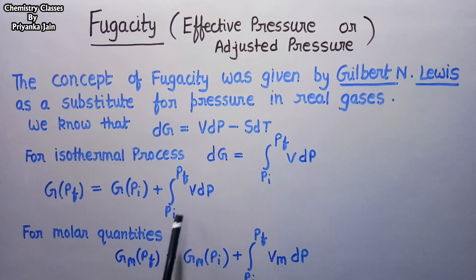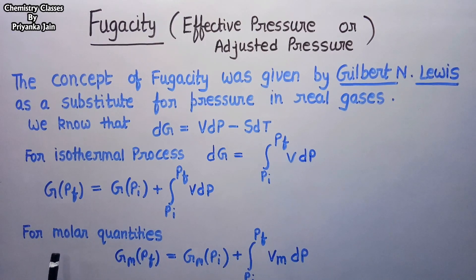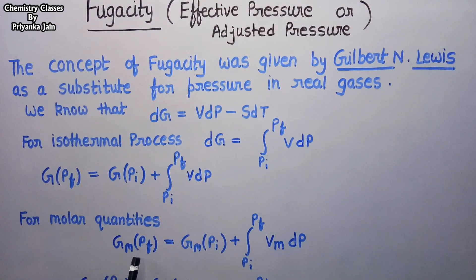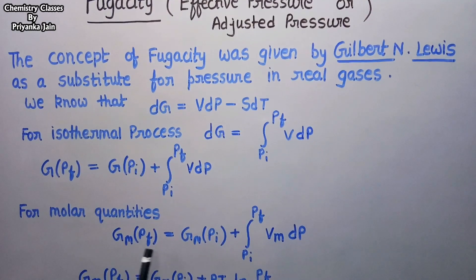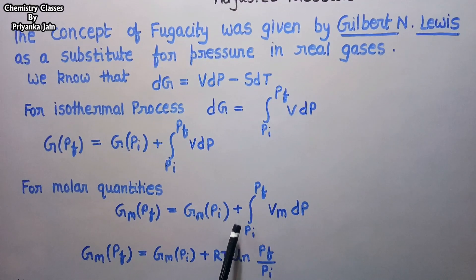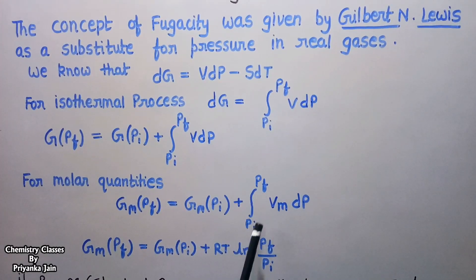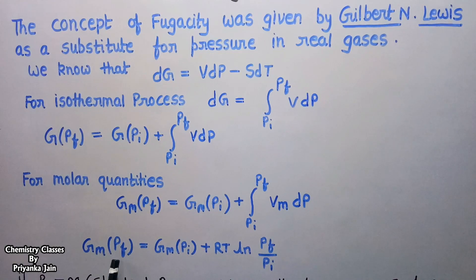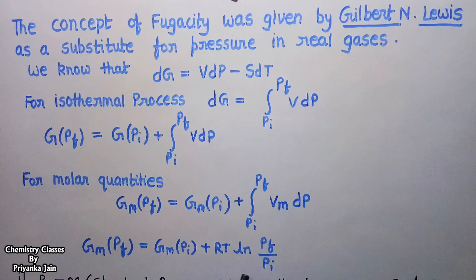If we take the molar quantities, the equation is written as: the molar Gibbs free energy at the final pressure equals molar Gibbs free energy at the initial pressure plus the integration from p_i to p_f of the molar volume dP. We can also write this as G_m at pressure p_f equals G_m at the initial pressure plus RT ln(p_f / p_i).